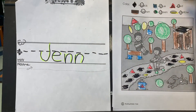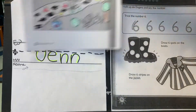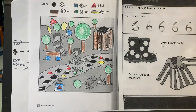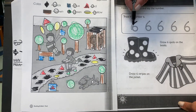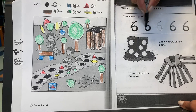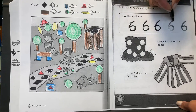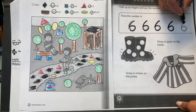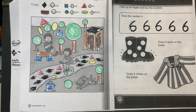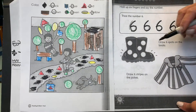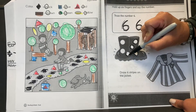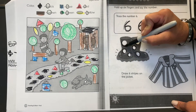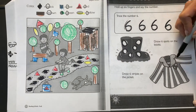The next page is to trace the number six. When we trace the number six, we start at the top, slide down, and loop it in. Good job - it's pretty easy. Now let's take a look at the dots on the boots: one, two, three, four, five, six.